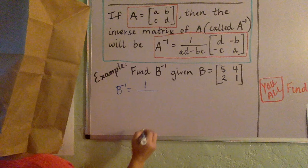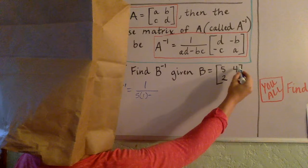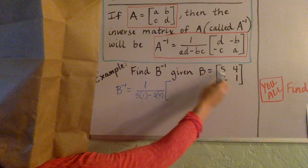So we're going to do B inverse has got to be 1 over 5 times 1 minus 2 times 4. That's going to be our fraction out in front.